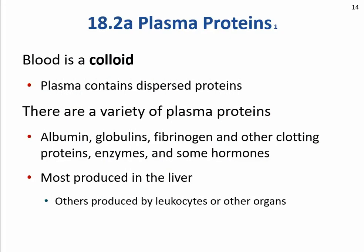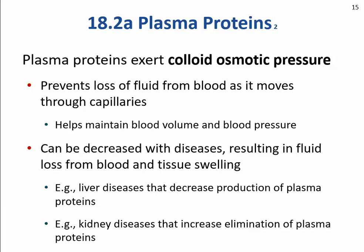Blood is a colloid of proteins, and those proteins are almost entirely produced in the liver — albumin, fibrinogen, and many enzymes. Some globulins are made in the liver, but the vast majority of gamma globulins are made in the blood itself by white blood cells, specifically plasma cells. The colloid osmotic pressure created by those proteins prevents loss of fluid from the blood as it passes through capillaries, maintaining blood volume and blood pressure.